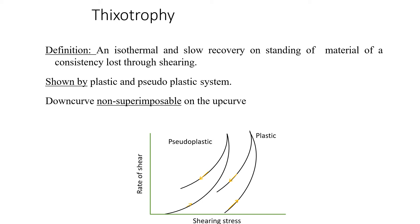In a thixotropic system, asymmetrical particles set up a loose three-dimensional structure throughout the sample at rest. This structure has some degree of rigidity and resembles a gel. Once shear is applied and flow begins, the structure starts to break down as points of contact are disrupted, particles become more aligned, and the material undergoes gel-to-sol transformation, ultimately showing shear thinning behavior. Once the stress is removed, the structure starts to reform again.